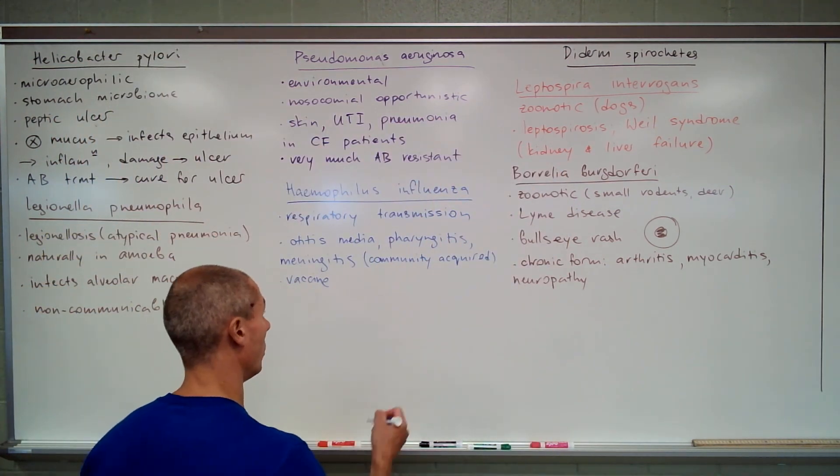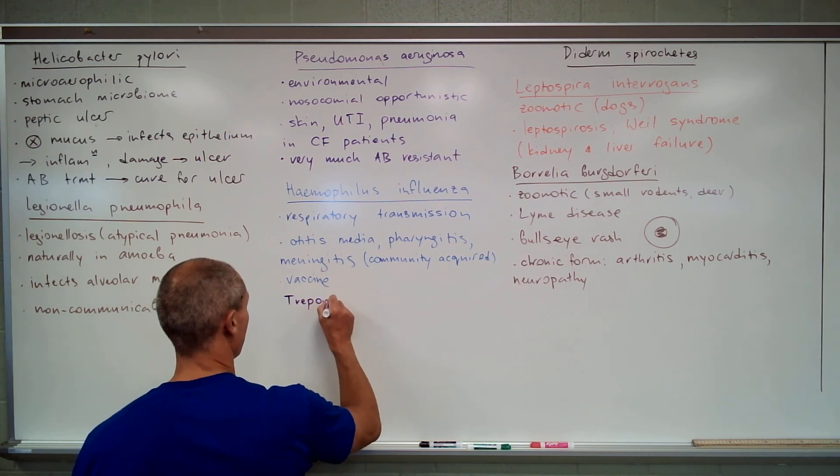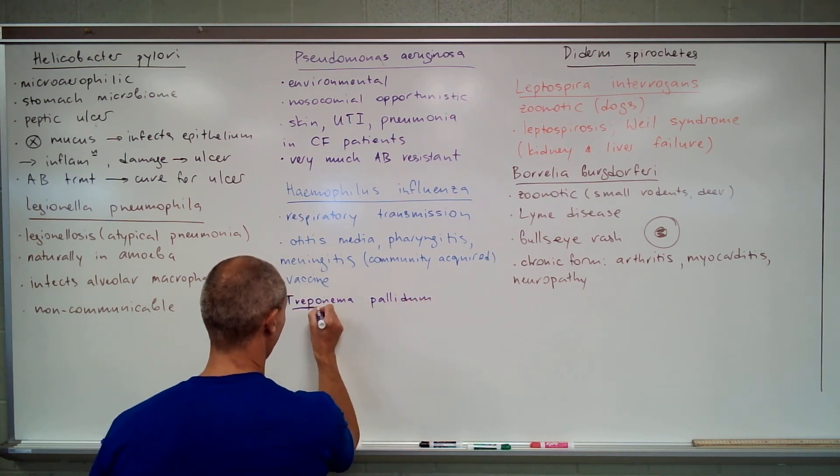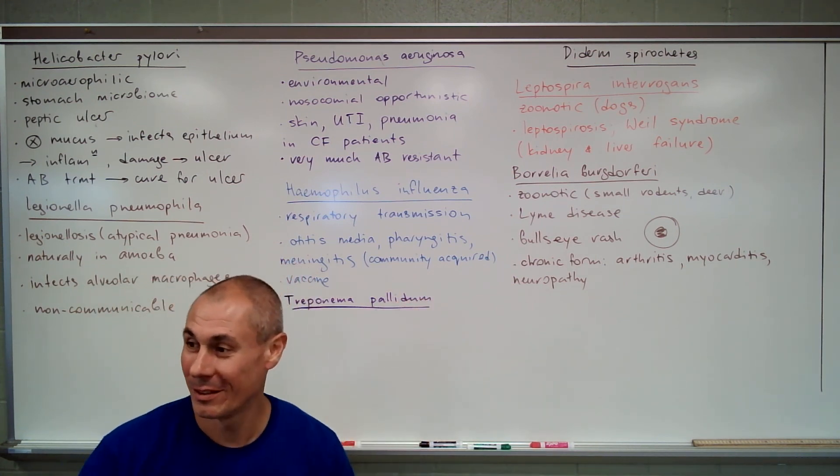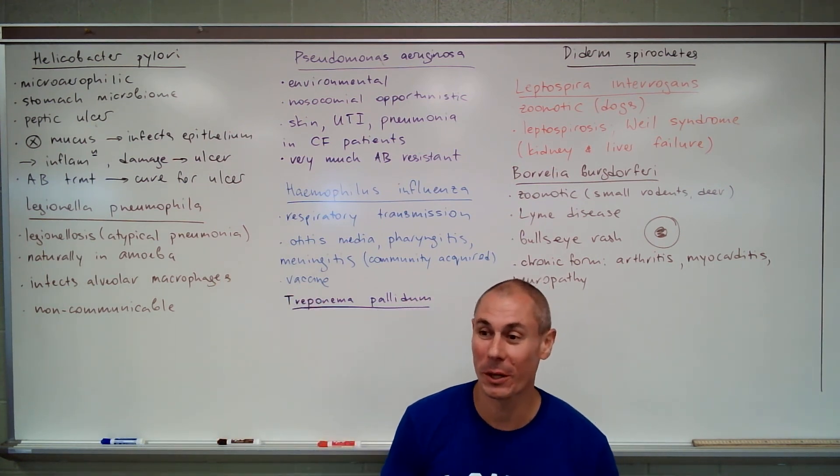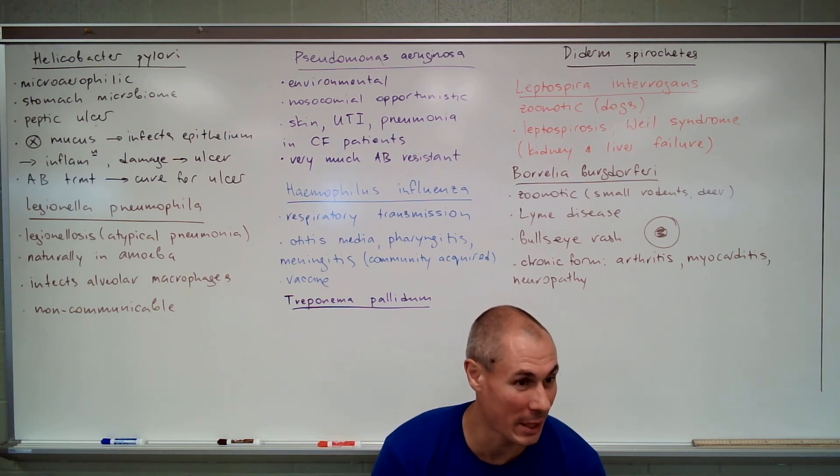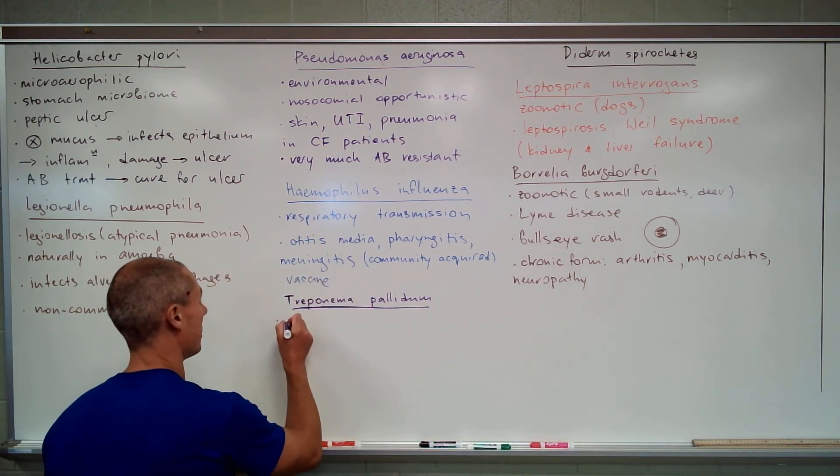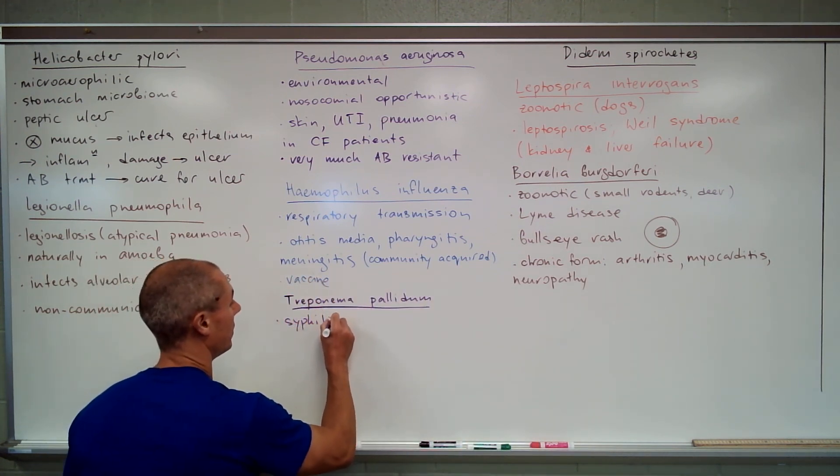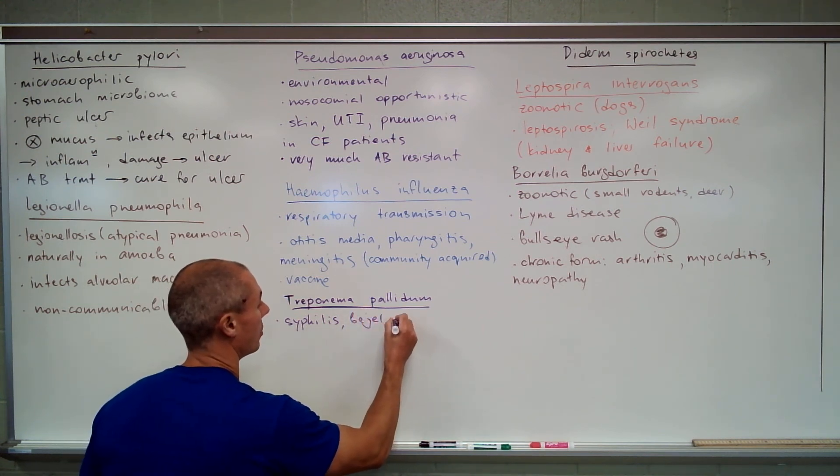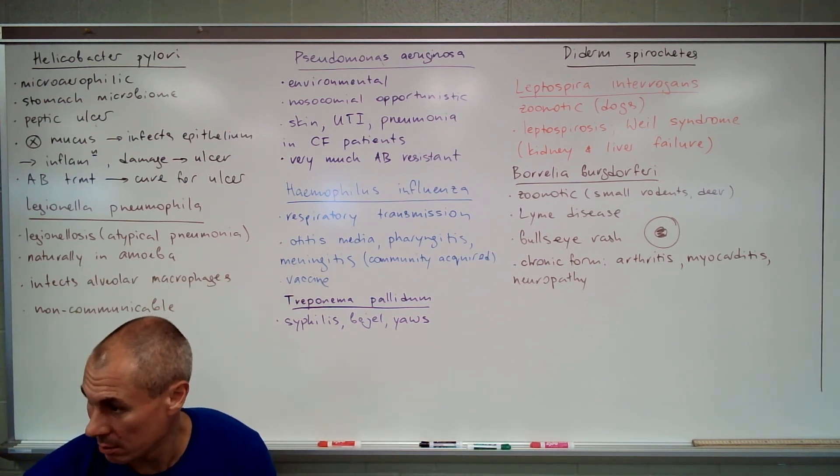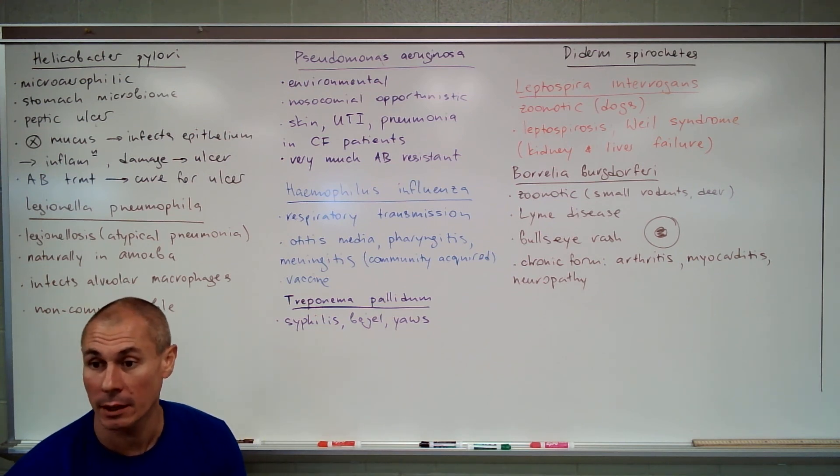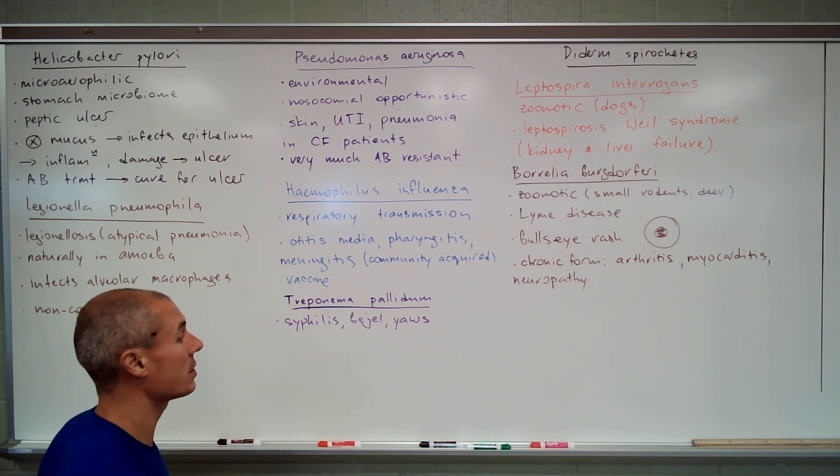And the most fun of them all, of course, it's Treponema pallidum. It's actually really interesting. Now look, Treponemas are pretty common microorganisms in your mouth. I mean, they're normally present in oral microbiome. But that particular one is the primary pathogen that causes diseases such as syphilis, syphilis, bagel, and yaws. They're all basically syphilis. Bagel and yaws are a little bit milder forms, if I may say.